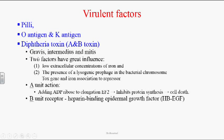There are three strains of Corynebacterium diphtheriae with different generation times: gravis, intermedius, and mitis. Two factors influence production of diphtheria toxin. First is low extracellular concentration of iron — Corynebacterium diphtheriae always produces diphtheria toxin when there is low surrounding iron concentration, producing an excessive amount that helps cause infection in humans.